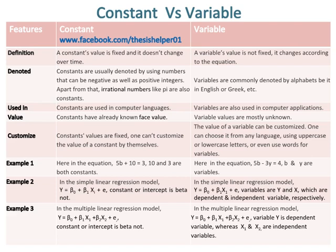In example 1, here in the equation, 5b plus 10 is equal to 3, 10 and 3 are both constants. Whereas in the equation, 5b minus 3y is equal to 4, b and y are variables.